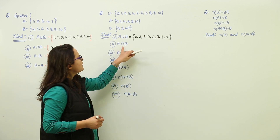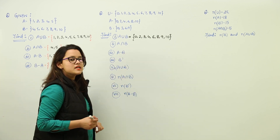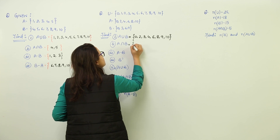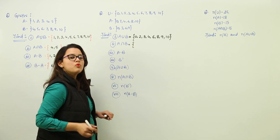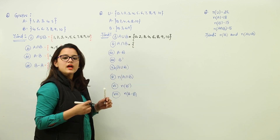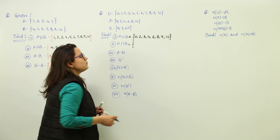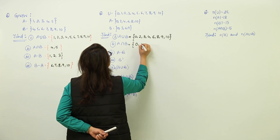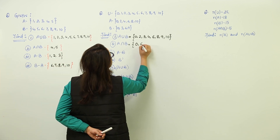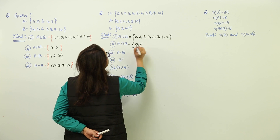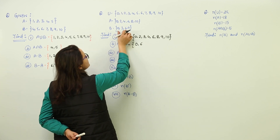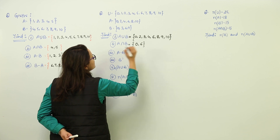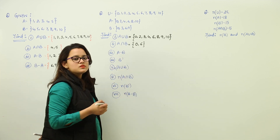Next is finding out the intersection. Intersection means that the elements are present both in A as well as in B. Those elements are 2 and 6. These are the only two elements common to both, so we have written down A intersection B.